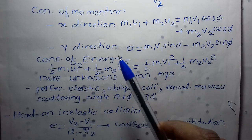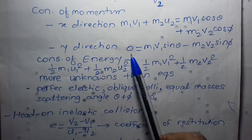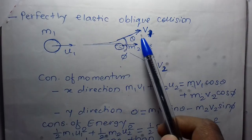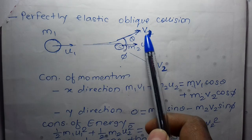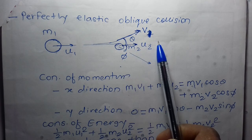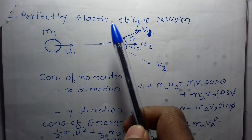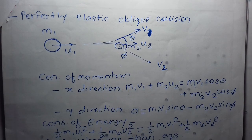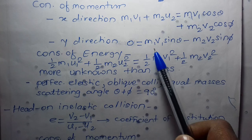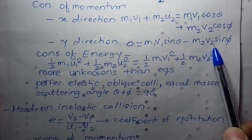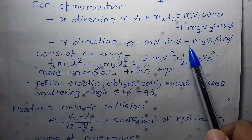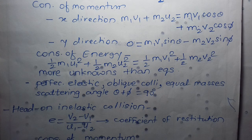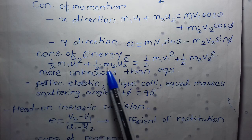For conservation of momentum in the y-direction, the initial momentum is zero. The upward component of v1 is v1·sinθ, so the first mass contributes m1·v1·sinθ. The component of v2 along the vertically downward direction is v2·sinφ, so we get m1·v1·sinθ − m2·v2·sinφ = 0, since v2 is in the downward direction.